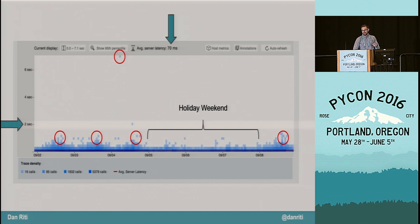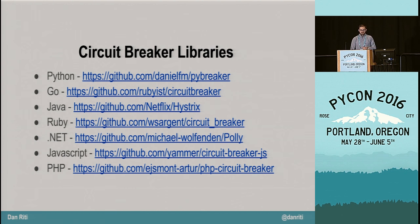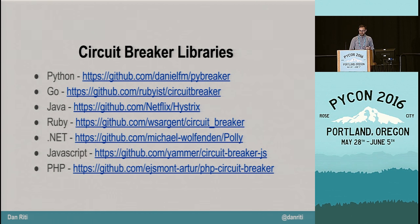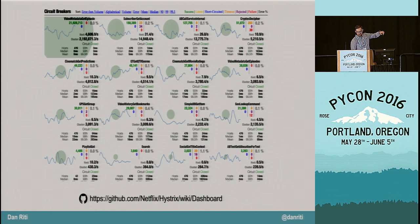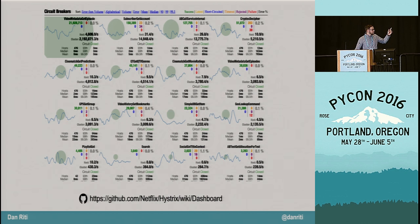I highly recommend looking into performance monitoring if you're not using it already. This pattern is very well established, so library support is real. For Java folks, Netflix's Hystrix library is more than just a circuit breaker — it's a full-featured fault-tolerance library. One of the cool things is it comes with a complete circuit-breaker monitoring dashboard. This screenshot shows Netflix monitoring integration points within their system using circuit breakers. Each section represents a single circuit breaker in its current state — it'd take 30 minutes to describe, but it's a nice freebie you get with the library.